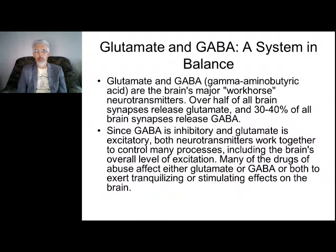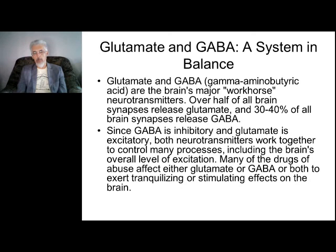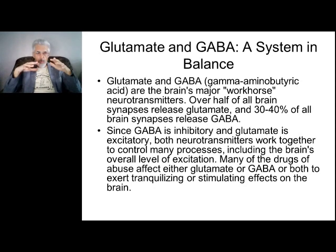Next very important neurotransmitter: GABA. You remember it has a very large volume in the nervous system. GABA is like a workhorse because a very large number of neurons and neuroglia work with this neurotransmitter. It is an inhibitory neurotransmitter — it decreases the activity of neurons and decreases brain activity in general. When we want to decrease brain activity, we need to use drugs that stimulate GABA receptors.